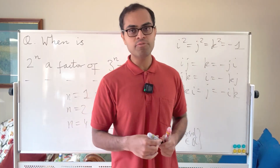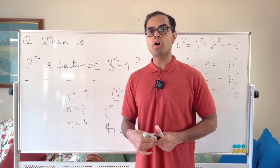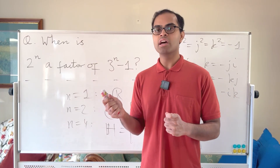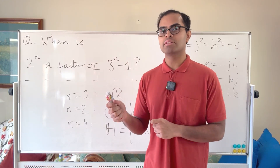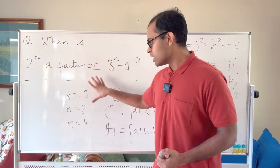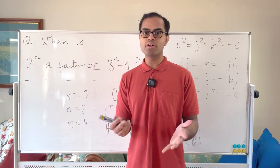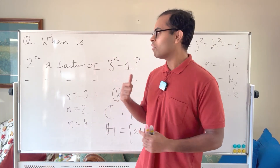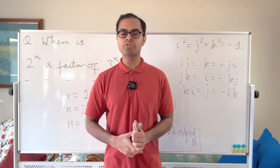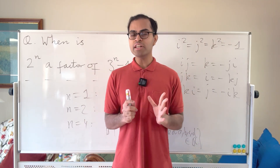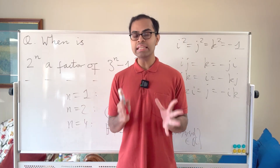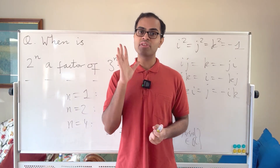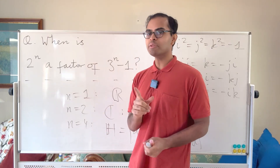In dimension 8 you have the octonions, but they are not associative for multiplication — a·(b·c) differs from (a·b)·c — so when you include associativity, only dimensions 1, 2, and 4 remain. Drop a comment below if you want to see a proof or the theory leading up to that — I'd love to make it if there's interest.